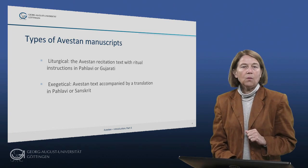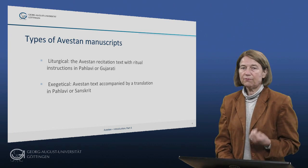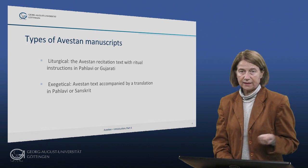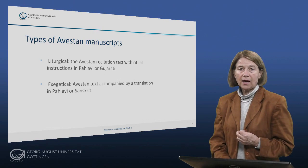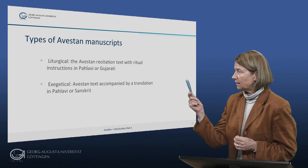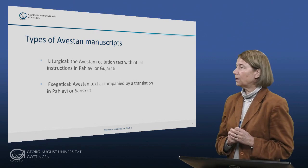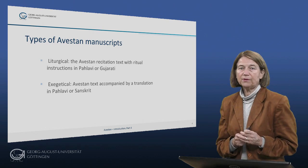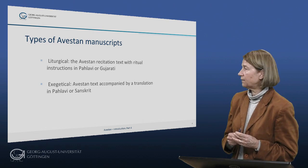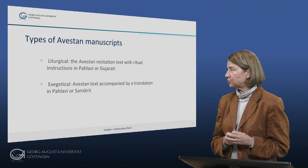Once the script was created they must have started to use it for writing Avestan. They could of course have used it for writing any text, and this would in all probability have included the rituals. The manuscripts that survive to the present day are of two types. They either offer the Avestan recitation text accompanied by ritual instructions in Pahlavi or Gujarati — these are usually referred to as liturgical manuscripts — or they offer the Avestan text accompanied by a translation in Pahlavi or Sanskrit, and these are usually referred to as exegetical.